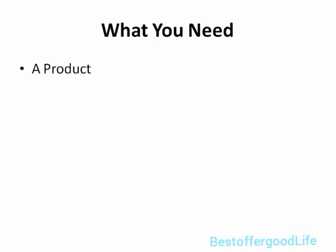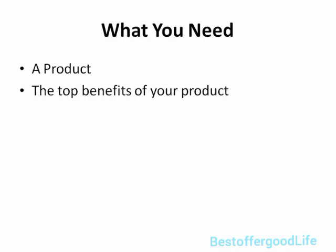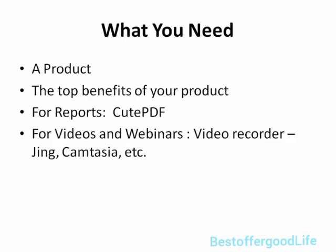Here's what you need. You need a product and you need to know the top benefits of your product — in other words, the top reasons why somebody wants to buy it, whether it's software, a video course, a report, a webinar, a coaching course, and so forth. For reports, you're going to need a software called QtPDF — it's free. For videos and webinars, you need some sort of video recorder and of course a microphone. There's Jing, Camtasia, and many other free softwares that I'll show you in that specific video.